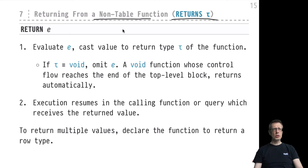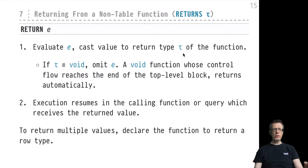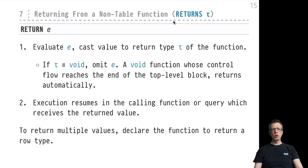To define what cell value is being returned from such a function, there is the special RETURN keyword, familiar from most statement-based imperative programming languages. We would evaluate expression E, cast it to the return type tau of our function, and that would be the cell value defining the result of our non-table function.